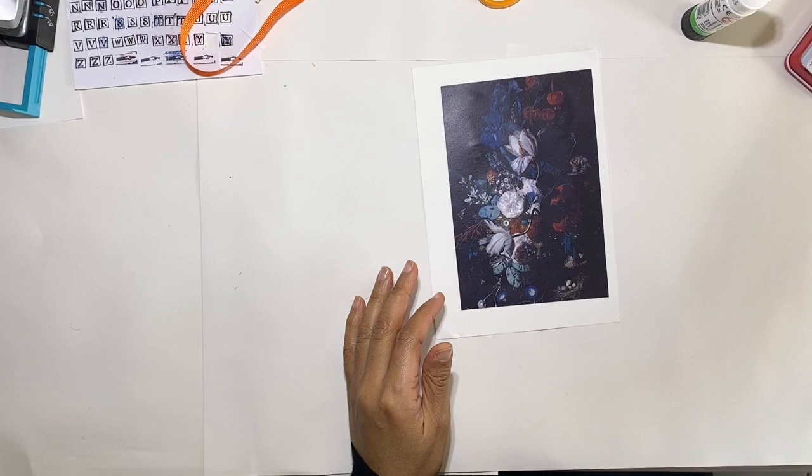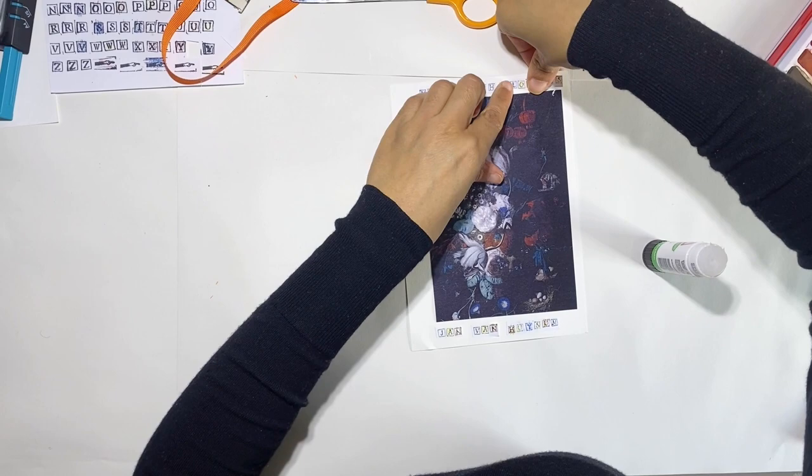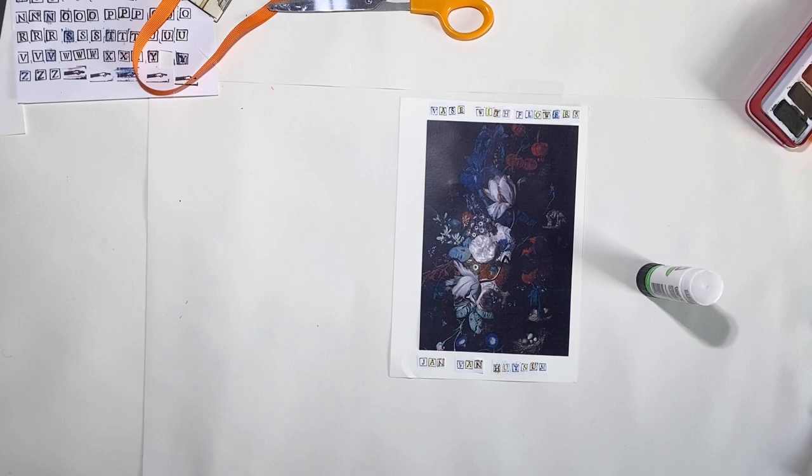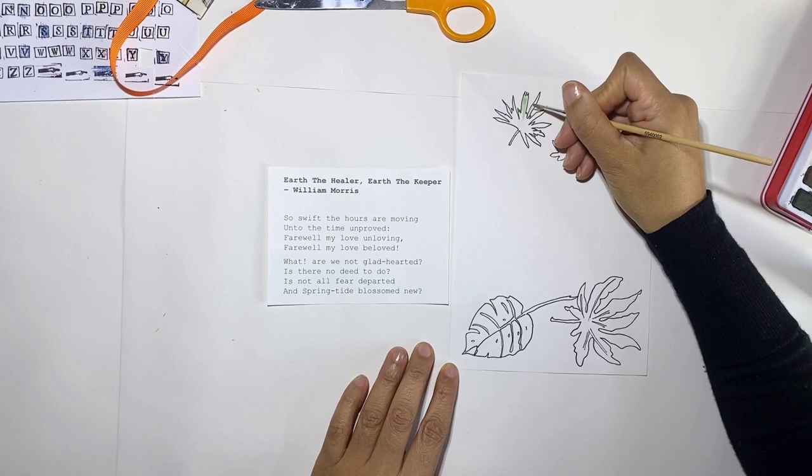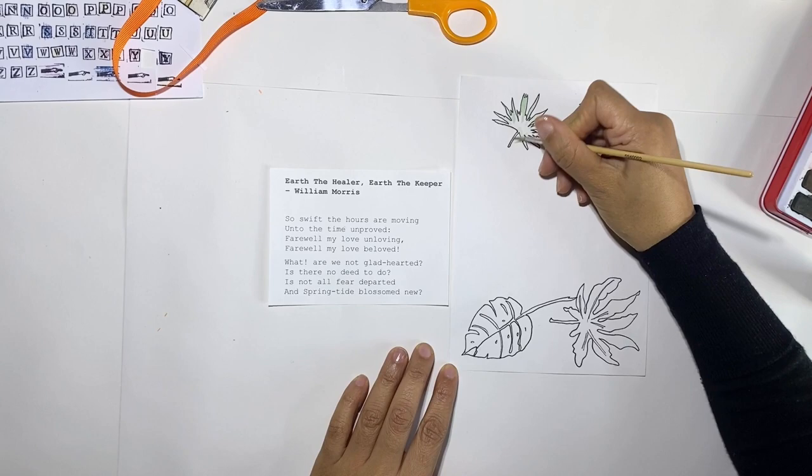I'm using the letter stamps to label and title the image. I'm also including the first two verses of the William Morris poem to inspire me. I'm going to mount it onto my drawing I started outdoors, but first I will finish it by adding some detail and color.